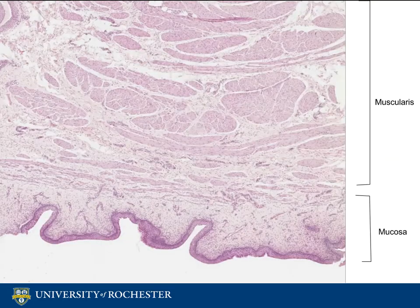Underneath the mucosa is the muscularis, which consists of smooth muscle. The smooth muscle of the bladder is called the detrusor muscle and consists of three layers: inner longitudinal, middle circular, and outer longitudinal. In most places the smooth muscle runs irregularly, except at the bladder trigone, making the three layers hard to discern.